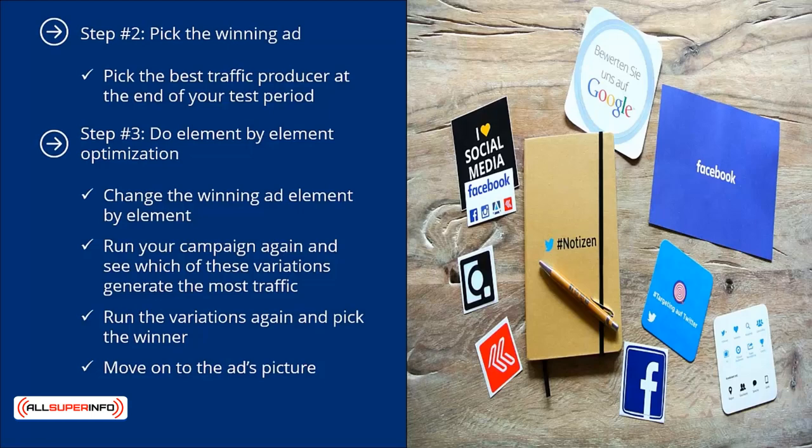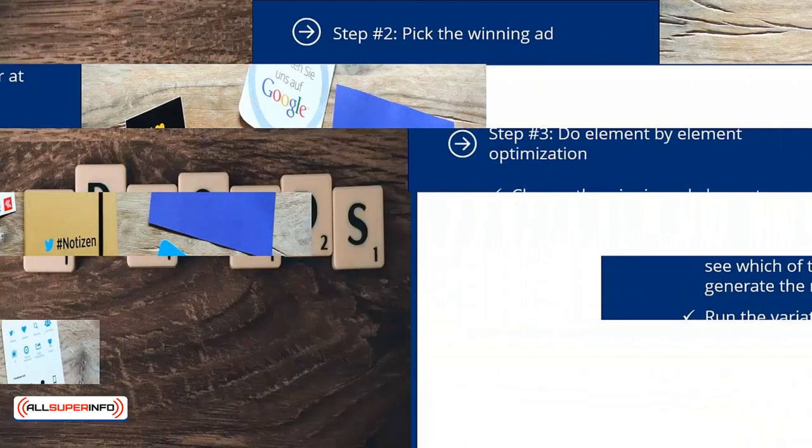At the end of this process, you will be able to identify the best performing ad because you have optimized all its elements — from the headline to the picture, to the description, to even the link. Step number four: scale up your ad buys. Once you have identified your winning ad, which converts at a predictable level, ramp up your budget and let it rip.